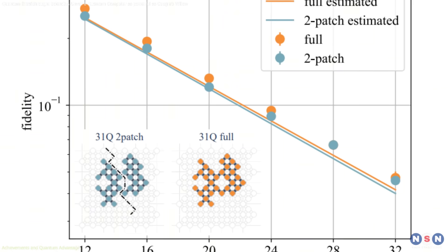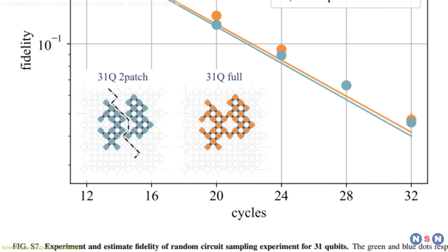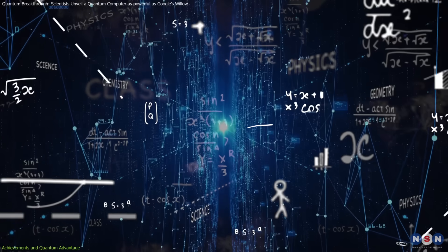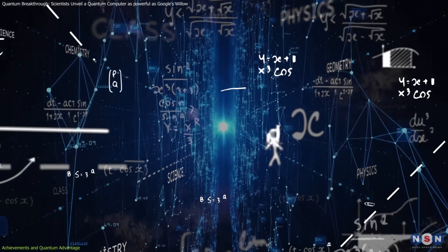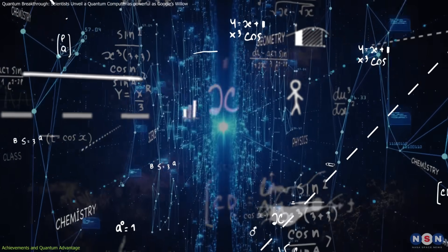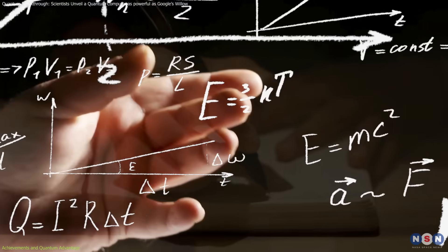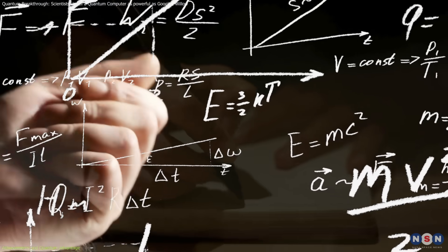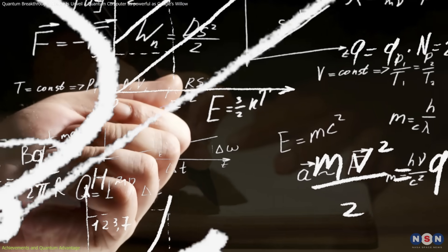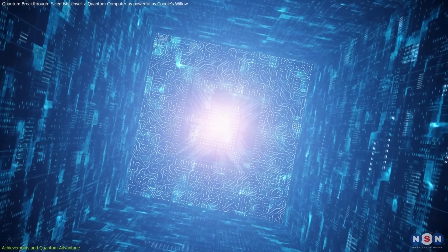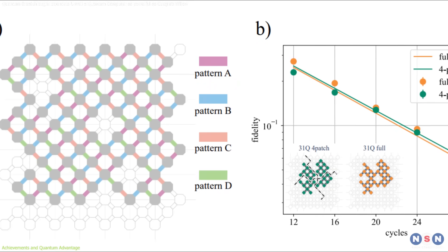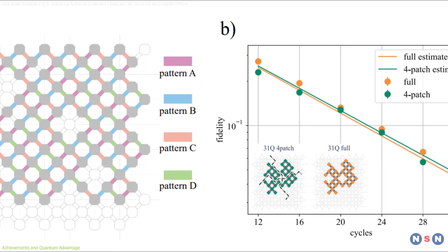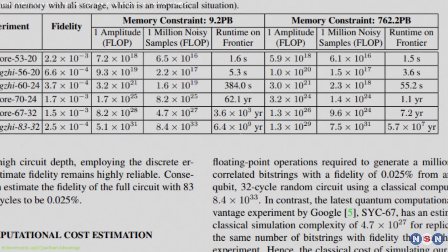This processor solved the problem of random circuit sampling, which involves running a series of unpredictable calculations and recording the results. To put this into perspective, imagine trying to write down the outcomes of billions of coin tosses, but with the added complexity of quantum mechanics. Zhu Changzhi 3.0 completed this task in just a few seconds.